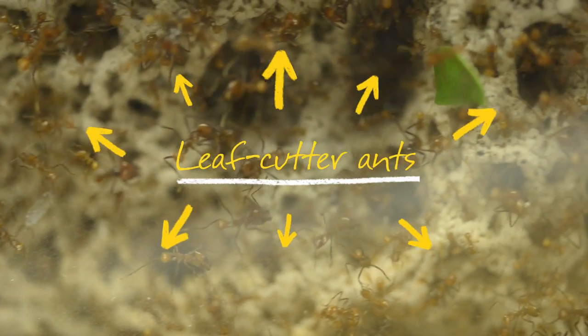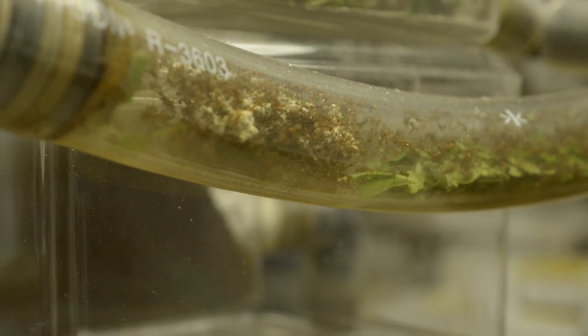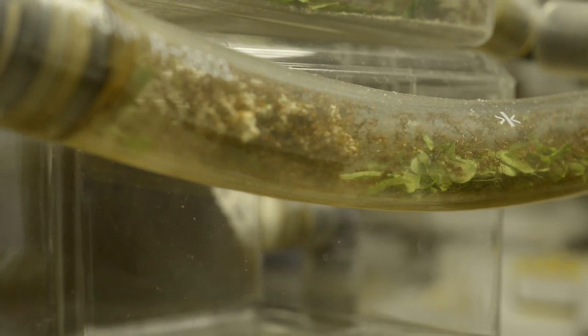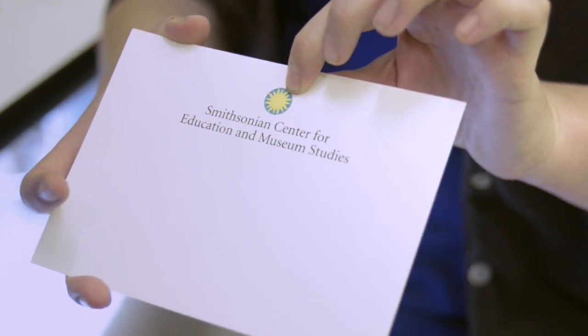We are in the insect zoo behind the scenes in the lab at the Smithsonian National Museum of Natural History. We decided that it would be really great if we could get these leaf cutter ants to pick up and carry our Smithsonian logo here.